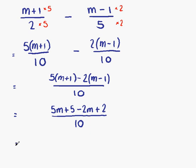On the numerator, the top line, we now have some like terms, which can be collected together. We have 5m and minus 2m, which is 3m, and we have plus 5 and plus 2, which is plus 7.